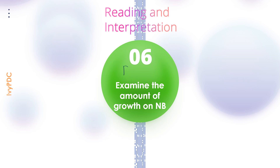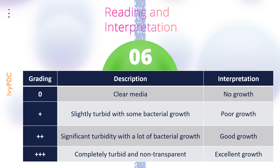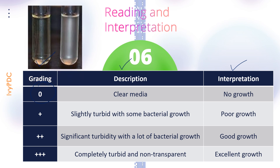Step six is done on day two, after 24 hours of incubation of all the nutrient broths. After incubation, examine the amount of growth in each nutrient broth using the provided reference table, checking the grading, description, and interpretation. A grade of zero is given when the nutrient broth is clear, indicating no bacterial growth.